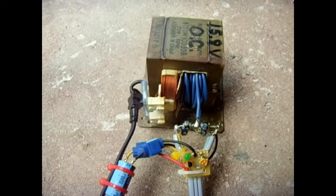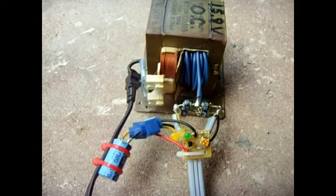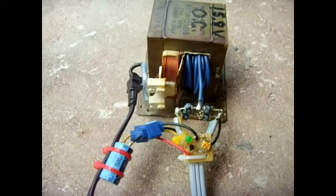I took a microwave oven transformer, removed the secondary, and wound it with approximately 18 to 20 turns of 12 gauge wire. I put it through a rectifier that I made out of four diodes.